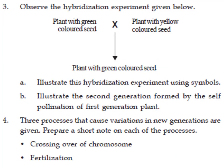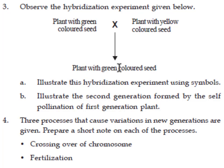Third question: observe the hybridization experiment. The plant with green colored seed and the plant with yellow colored seed are hybridized. The first generation produced is the plant with green colored seed. Illustrate this hybridization experiment using symbols.